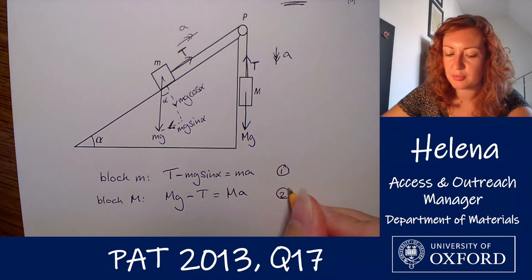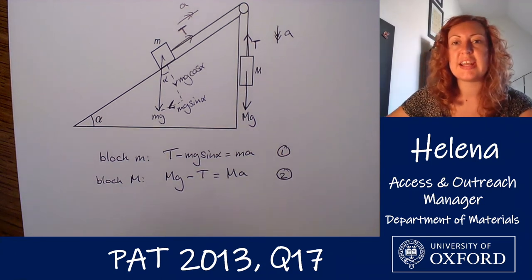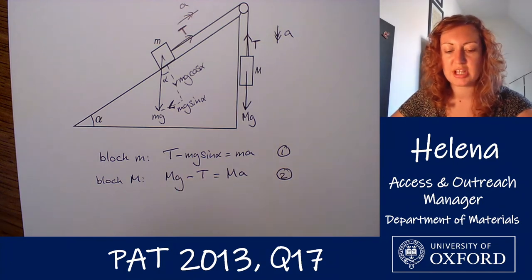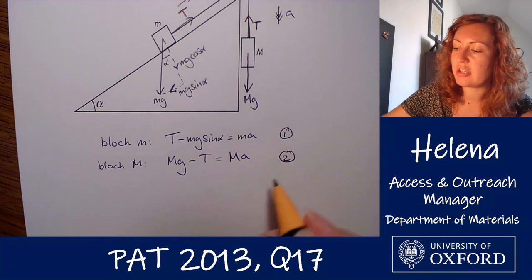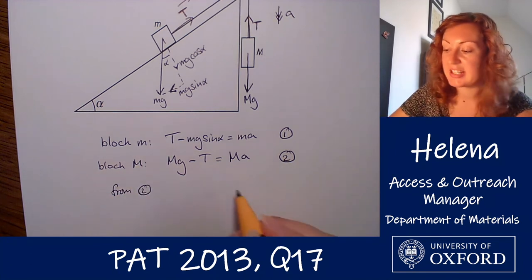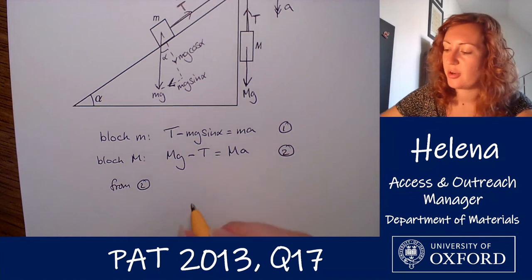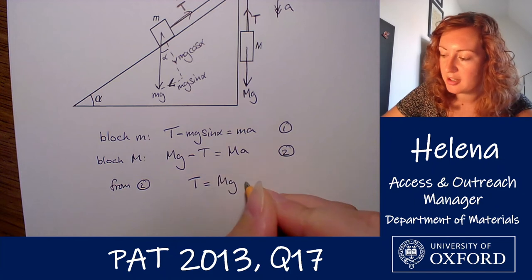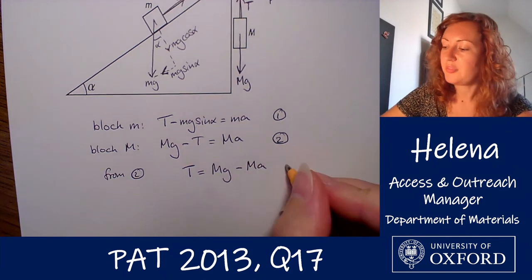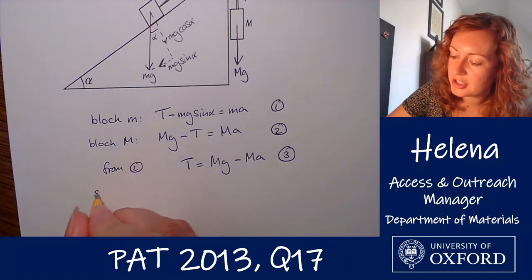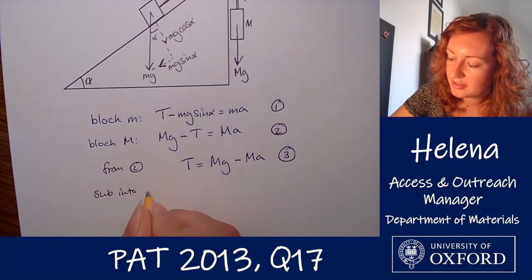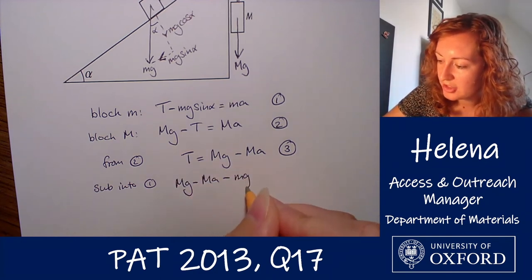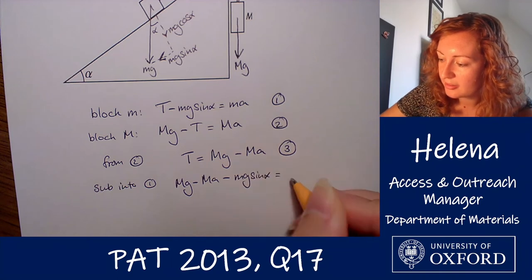Now we have two equations. Let's label them equation one and equation two. We rearrange one of them to eliminate either T or a and substitute into the other. I'll rearrange equation two to make T the subject and substitute that into equation one. Rearranging equation two gives T equals Mg minus Ma — call that equation three. Substituting into equation one gives: Mg minus Ma minus mg sin alpha equals ma.